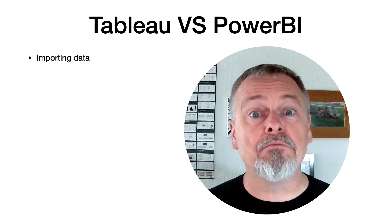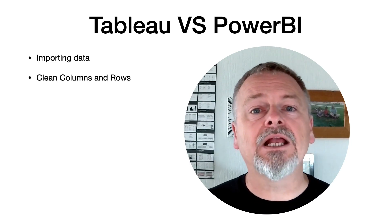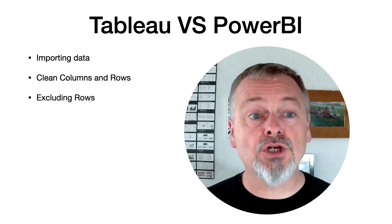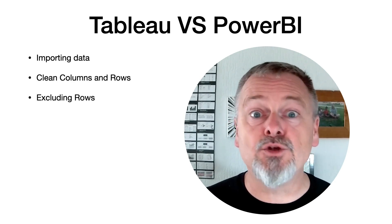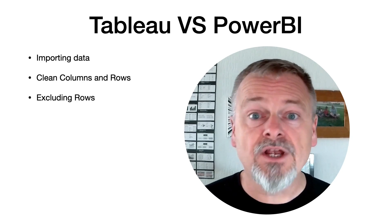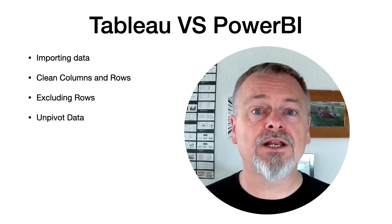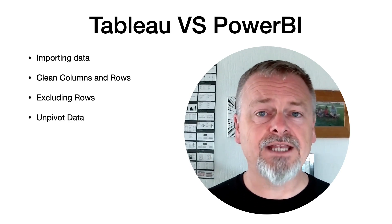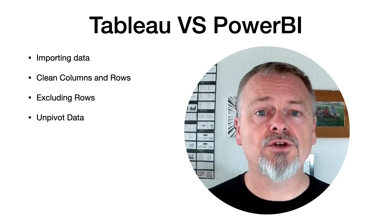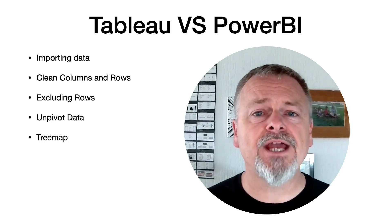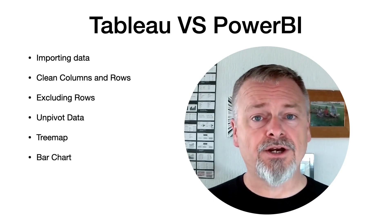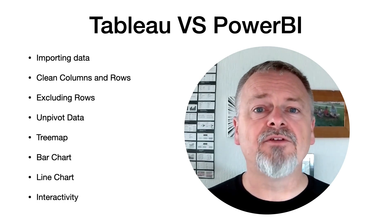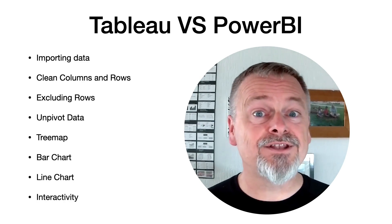Today's video is going to cover a number of topics. We're going to look at how we import data into the two tools, how we can clean up rows and columns we don't want, how to exclude specific rows that may be duplicating data with subtotals, and how to unpivot data — taking a bunch of columns and pivoting those down to create a better data structure. Then we're going to build a tree map, a bar chart, and a line chart, combine them into a dashboard, and add a little interactivity.